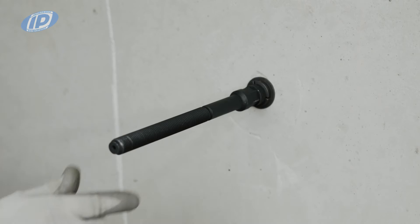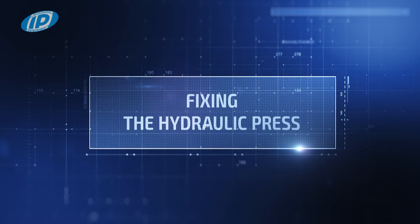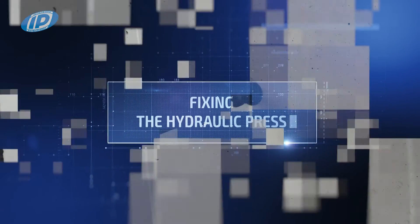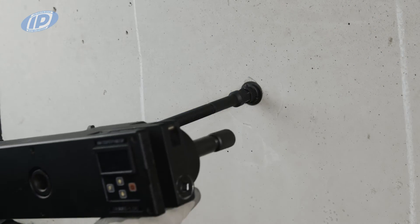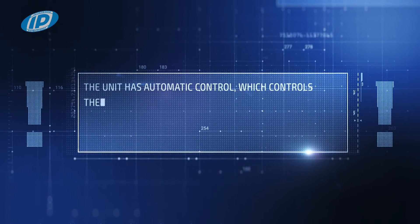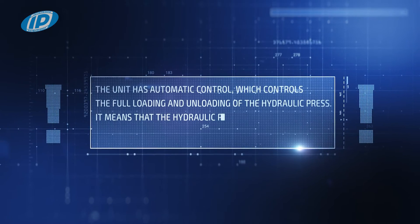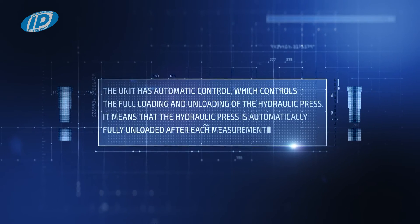After fixing the anchor, install a hydraulic press. The unit has automatic control which controls the full loading and unloading of the hydraulic press. It means that the hydraulic press is automatically fully unloaded after each measurement.